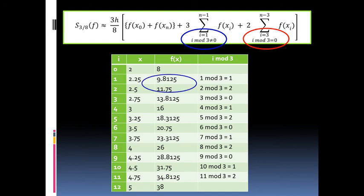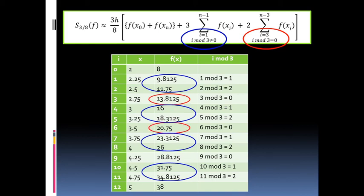Take a look at these values that are circled by blue. These are actually the values of f(x) where i modulus 3 is not equal to 0. And taking a look at these values circled by red, these are actually the values of f(x) where i modulus 3 is equal to 0.